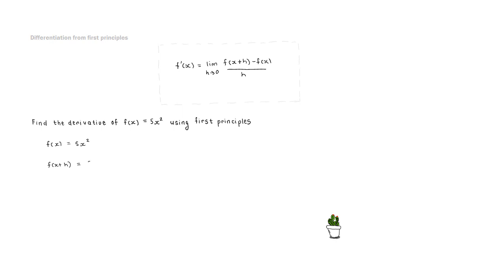So f of x plus h equals 5 times x plus h squared. We expand the binomial: x squared plus 2xh plus h squared. Then distributing the 5 gives us 5x squared plus 10xh plus 5h squared.